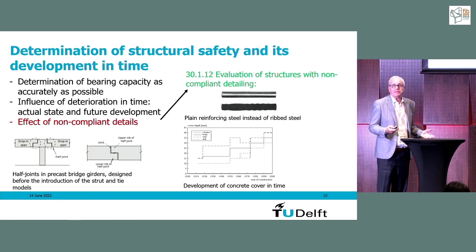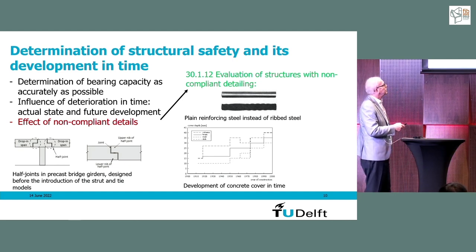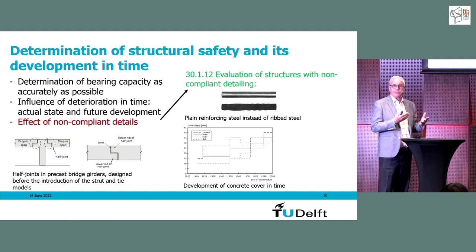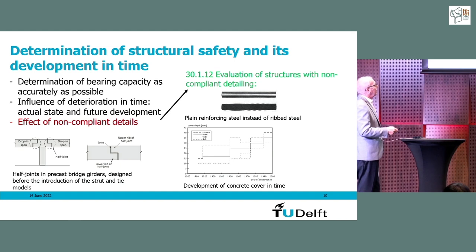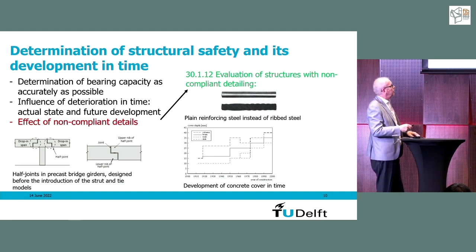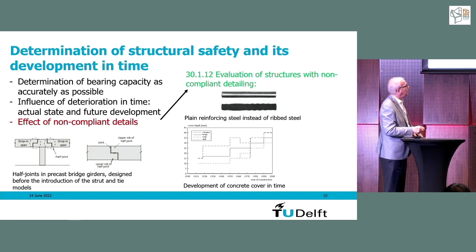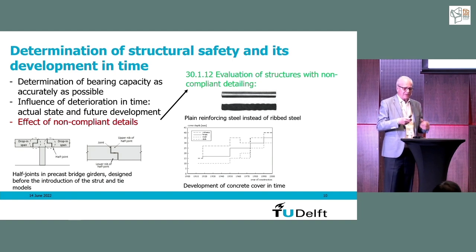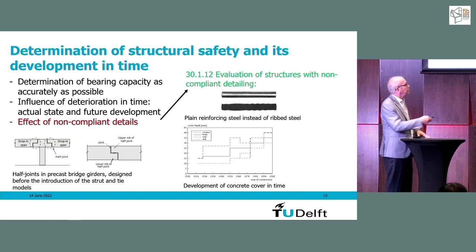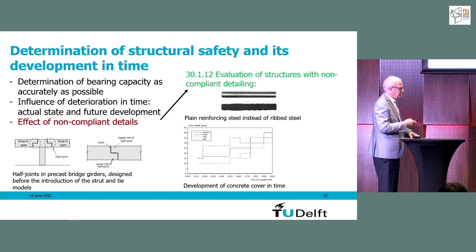Another non-compliant detail concerns the profilation of steel. Today we use ribbed steel and nobody thinks about designing with smooth steel, but in the past the steel was generally smooth. This influences not only crack width but also shear capacity. A further non-compliant detail — which does not immediately influence structural safety but does in the long run — is the concrete cover. A diagram from the Netherlands shows that in 1920, cover was sometimes only 10–15 mm. Stepwise, minimum cover was increased over the years to much larger values.